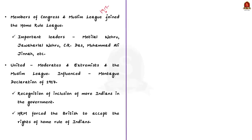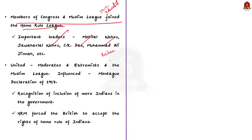Fourthly, the movement gained significant support from educated Indians with approximately 40,000 members in the combined league by 1917. Many members of the Congress and the Muslim League joined, including Motilal Nehru, Jawaharlal Nehru, C.R. Das, Muhammad Ali, Jinnah and others. The movement briefly united Moderates, Extremists and the Muslim League, creating solidarity. Sixthly, it created a cadre of leaders like Nehru who led future movements. Finally, it influenced the Montague Declaration of 1917, which recognized the inclusion of more Indians in government and the development of self-governing institutions, forcing Britain to accept Indians' rights to home rule.